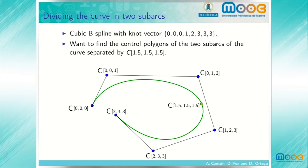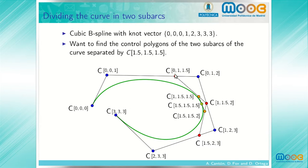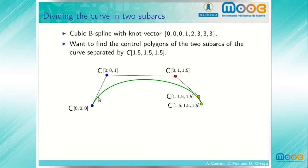To do so, we apply the DeVore algorithm to find this point. The DeVore algorithm gives these three red points in its first stage, the two yellow points in its second stage, and the point at t equals 1.5 on the curve in its third stage. The control polygon of the segment of the curve between t equals 0 and t equals 1.5 is given by these two control vertices from the original control polygon and these three points obtained when applying the DeVore algorithm.